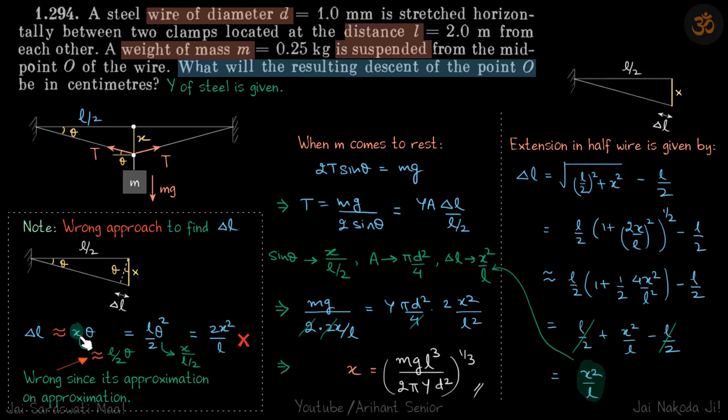And then on top of that you write X equals L by 2 theta. That is an approximation on an approximation. We cannot do that. Here you will see we have only done one approximation in every quantity. We have not done approximation within an approximation.